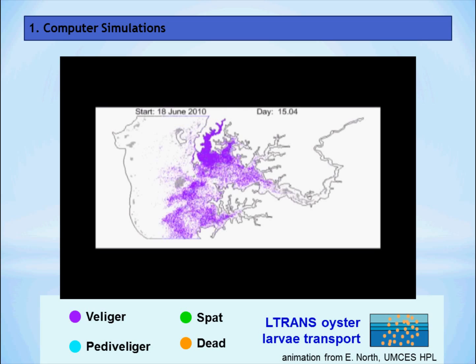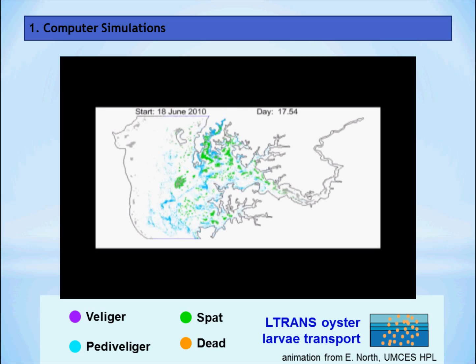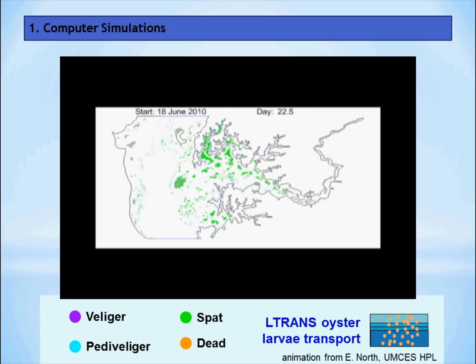As they disperse, once they become pediveliger larvae, they search for suitable habitat, and the ones that are green successfully land on an oyster reef. The ones that are orange don't make it and die.